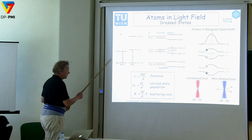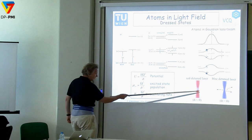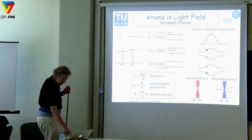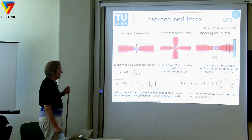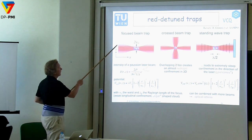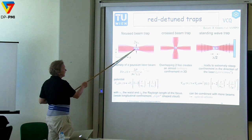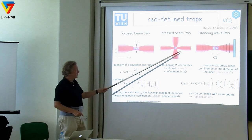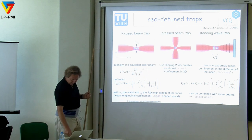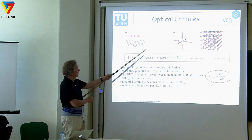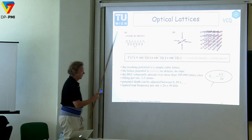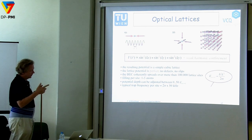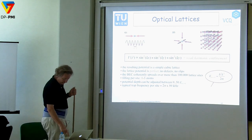So if I take a red-tuned laser, it attracts atoms; a blue-tuned laser repels them. A focused red-detuned beam puts atoms in the center. Two beams can hold them. A standing wave gives a lattice. Three standing waves give an optical crystal. These are the bases of many experiments, including optical lattice experiments. Two light beams give you pancakes, four give you cigars, six give you dots.